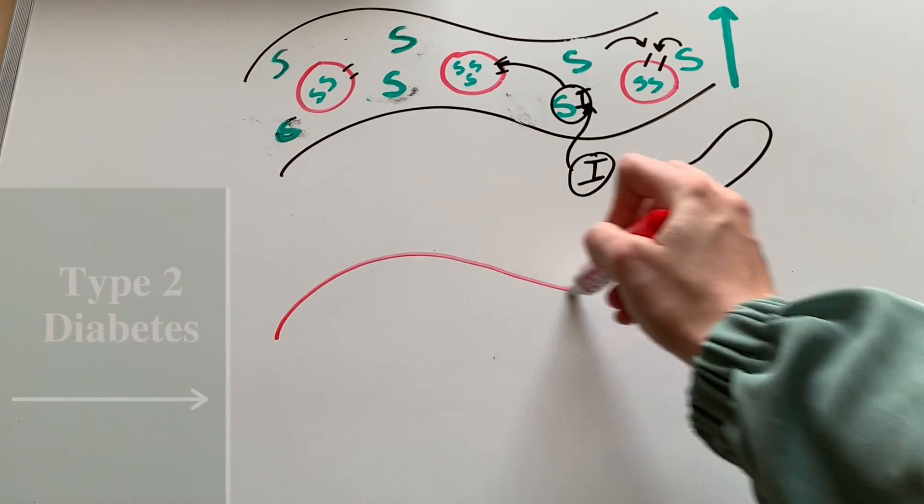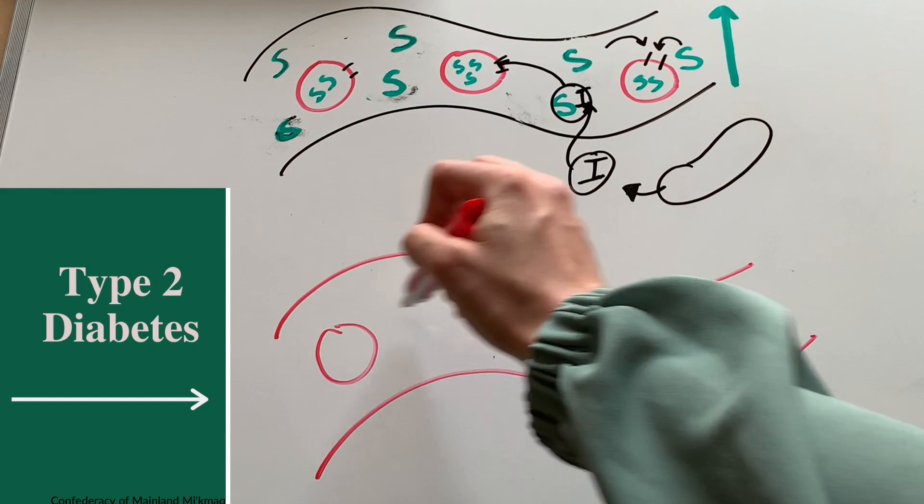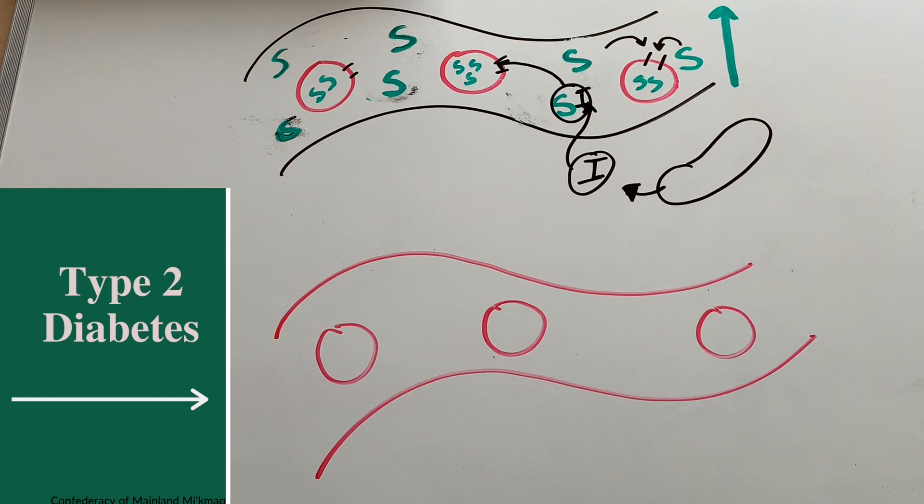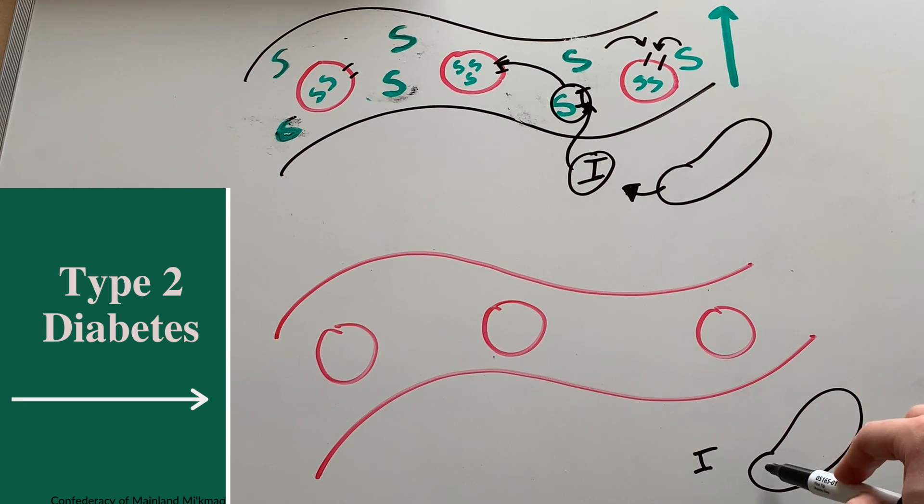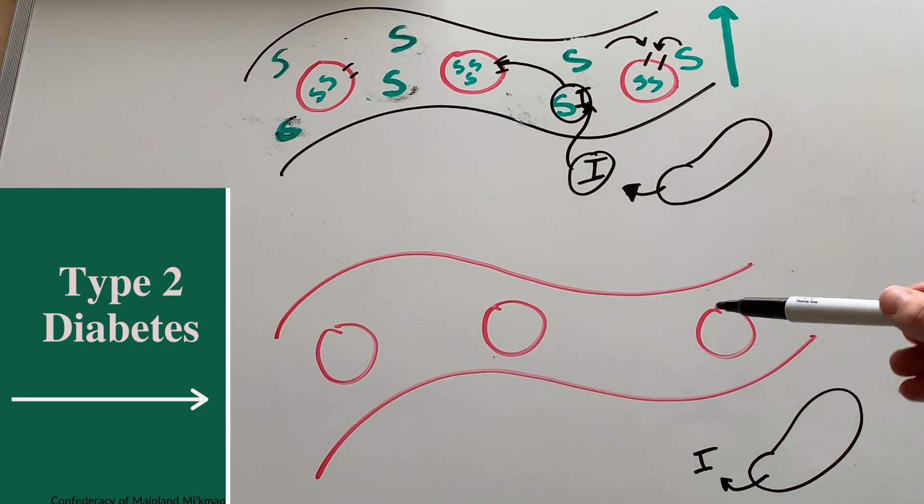However, let's see what happens in our body when we have type 2 diabetes. Again, this is your bloodstream and these are your body cells. Your pancreas still makes some insulin, but it isn't working like it used to.